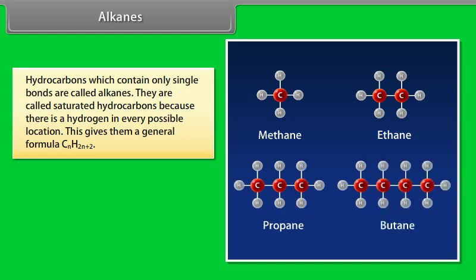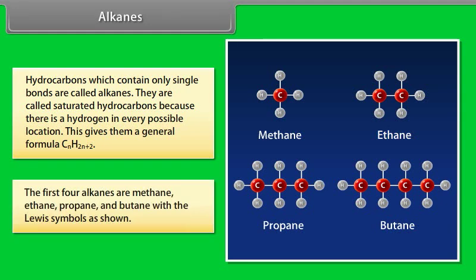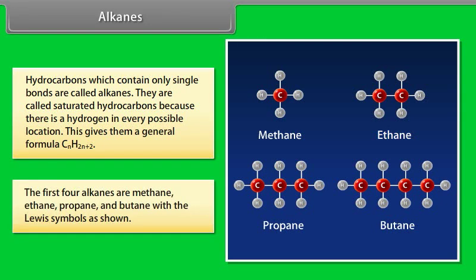Hydrocarbons which contain only single bonds are called alkanes. They are called saturated hydrocarbons because there is a hydrogen in every possible location. This gives them a general formula CnH2n plus 2. The first four alkanes are methane, ethane, propane and butane.